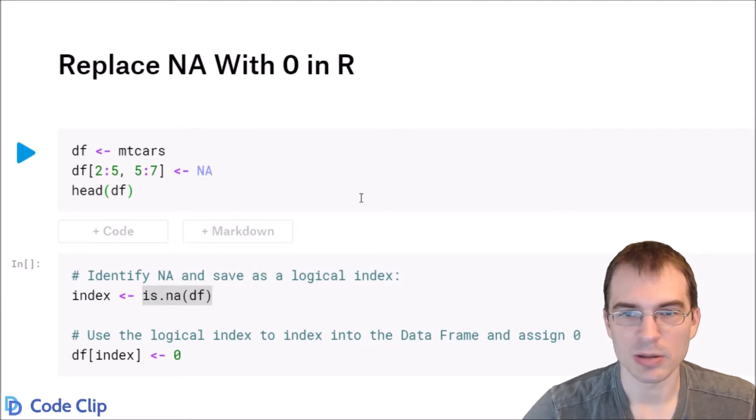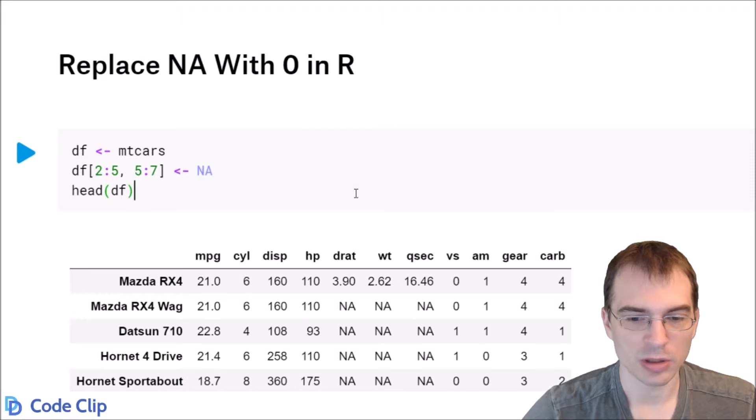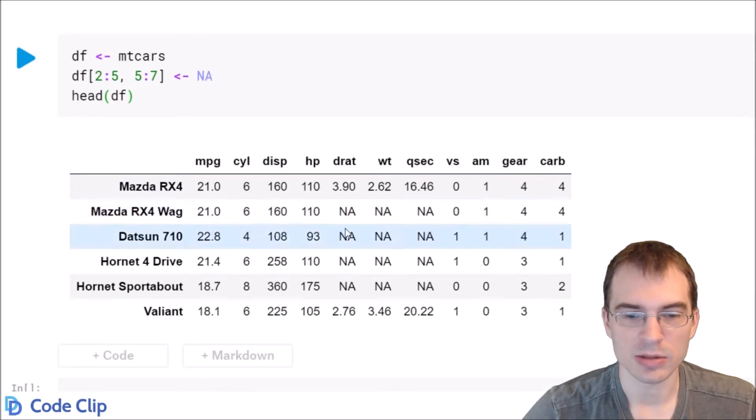It's a common value to replace NAs with. You can also use minus one, a large negative number, it really just depends on what you're trying to do. We'll do zero in this video. So here we're loading in a data set and setting some values to NA.